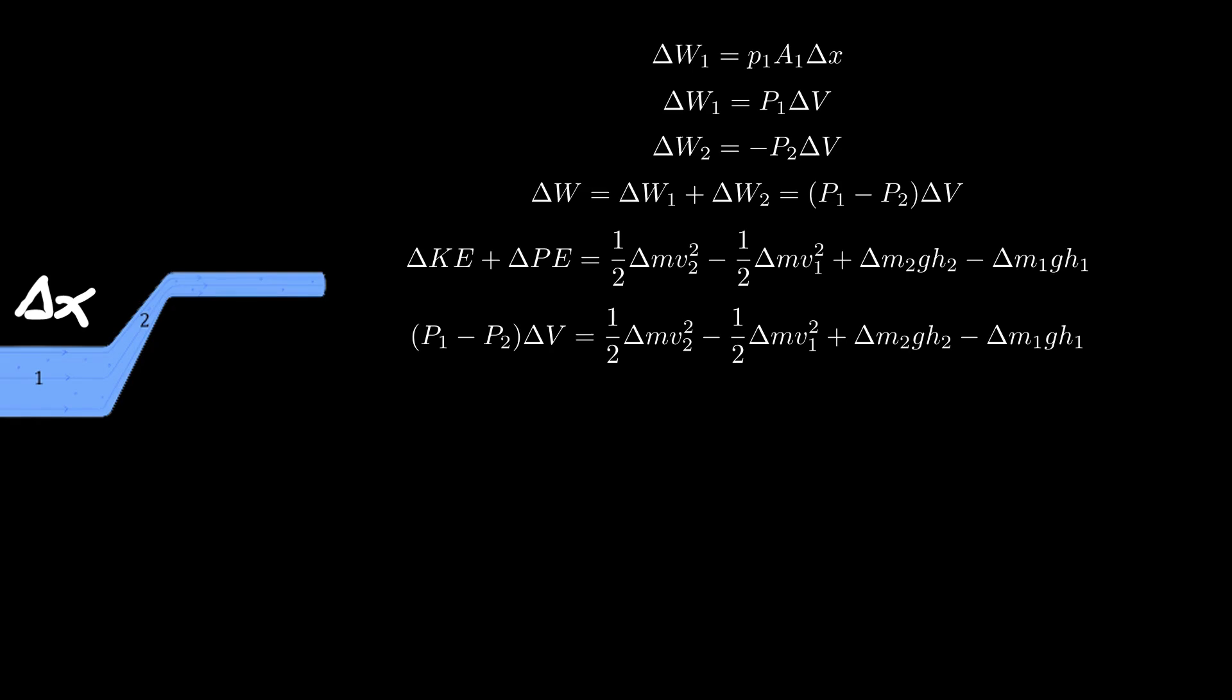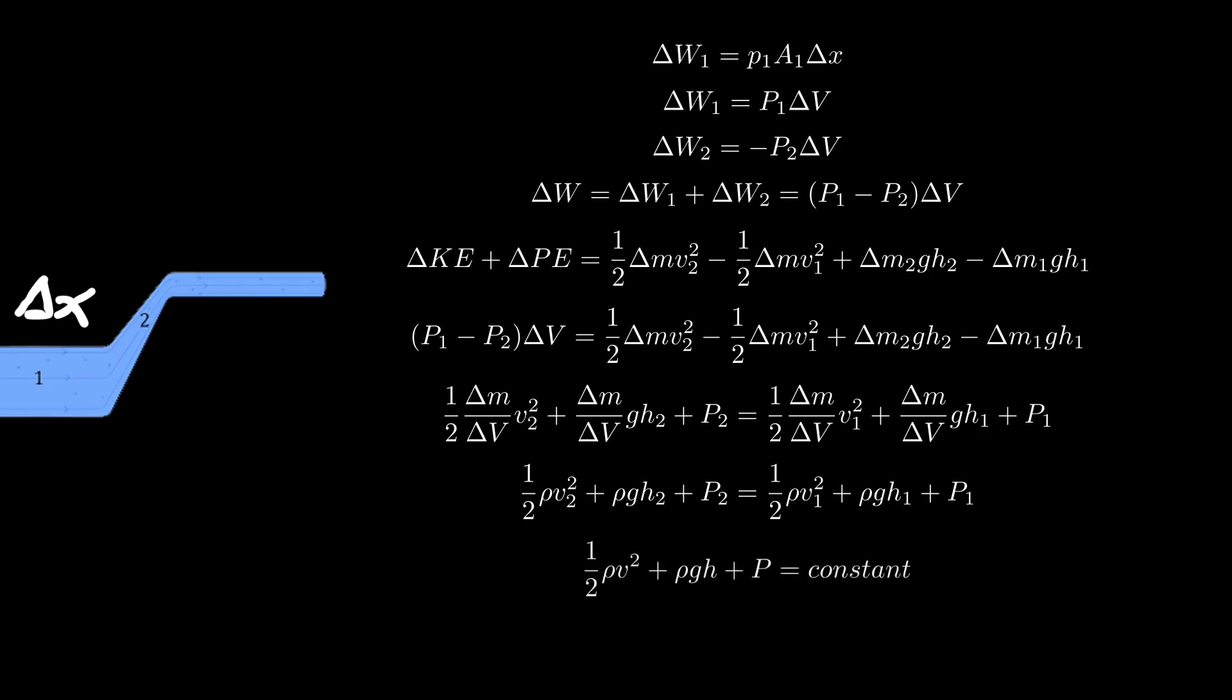But since change in gravitational potential plus change in kinetic energy is the change in work, we replace the value of change of work in this equation. Now doing some algebraic manipulation, we reach the following formula. But since mass divided by volume is just the density, we now have the following equation from which we have reached Bernoulli's equation.